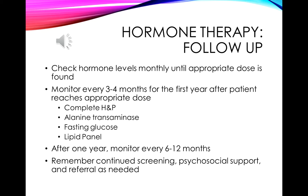For follow-up on hormone therapy, levels should be checked monthly until the appropriate dose is found, then every three to four years you repeat the history and physical and check key lab values to ensure the patient isn't becoming diabetic, that liver function is maintained, and that lipids are okay. After the first year, you can monitor every six to twelve months. Remember to continue screening for all body part-specific conditions and to continue providing psychosocial support and referrals as needed.